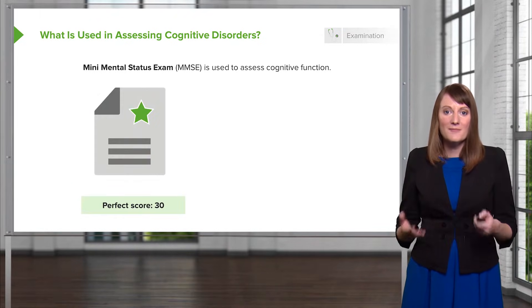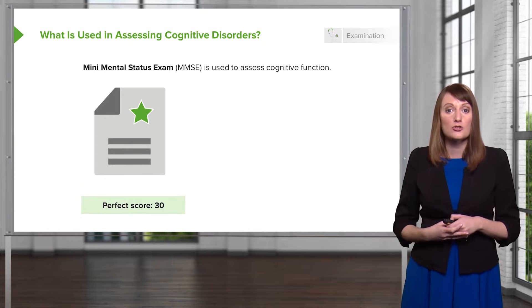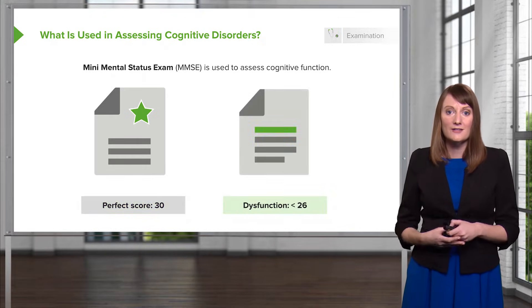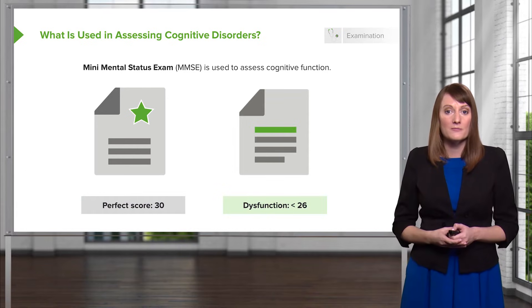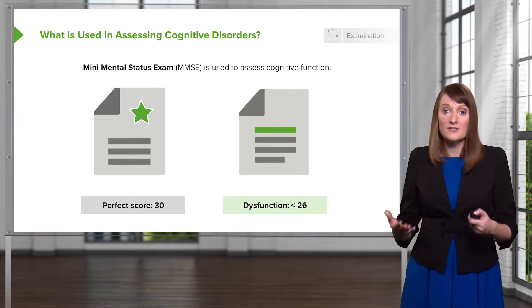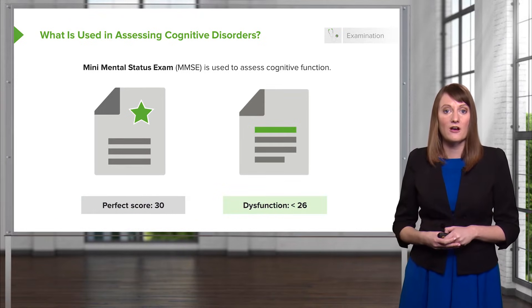The mini mental status exam is also called a Folstein. It's scored out of 30 points and really anyone falling below a 26 probably has some problems that need a little deeper digging into figuring out what's going on there with their cognition.